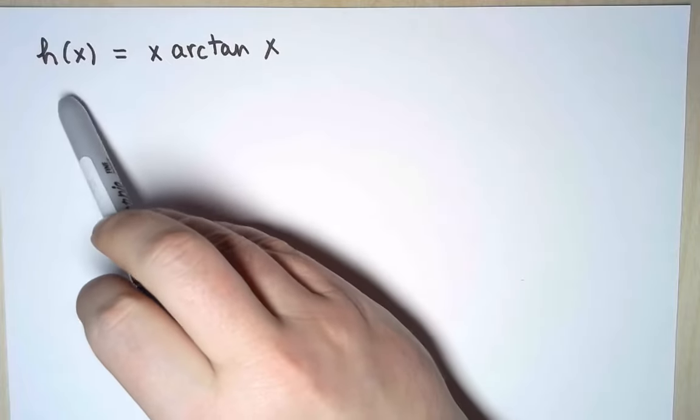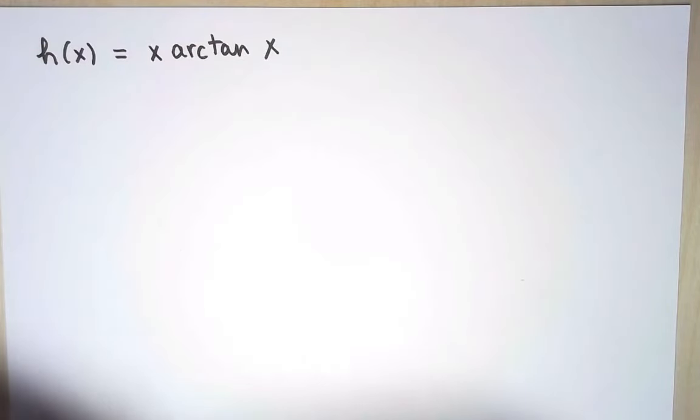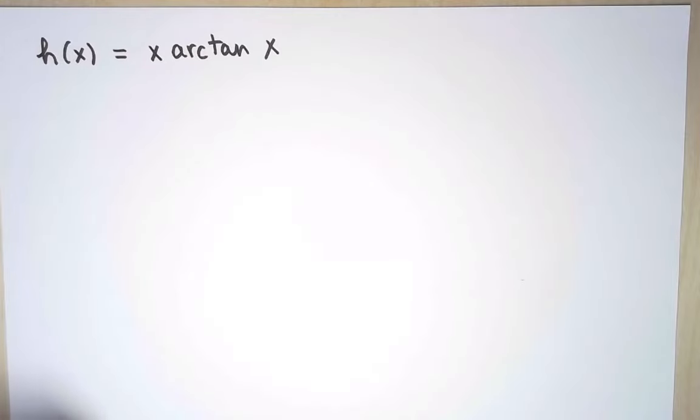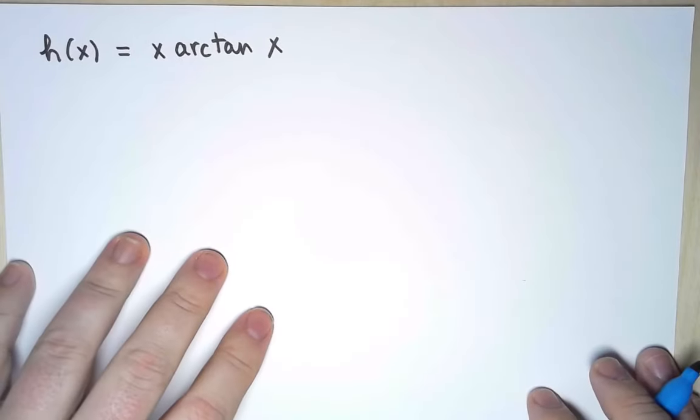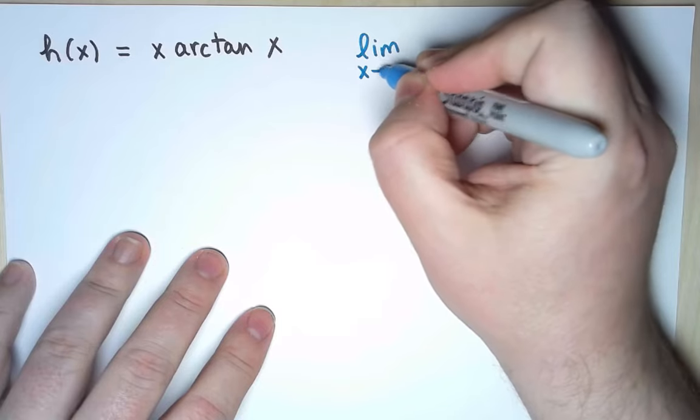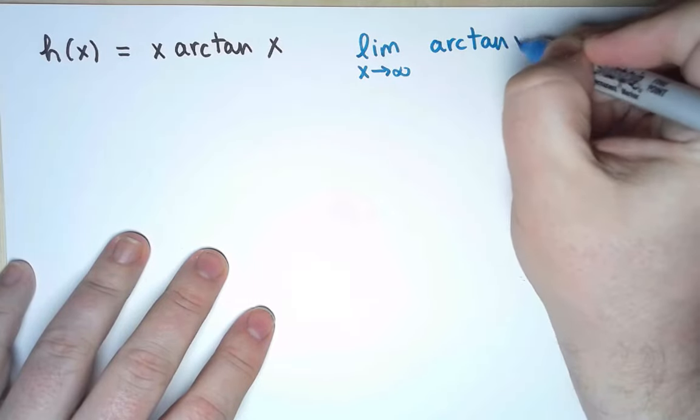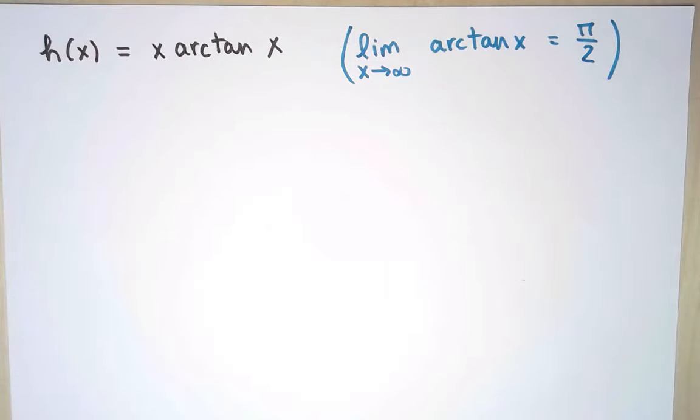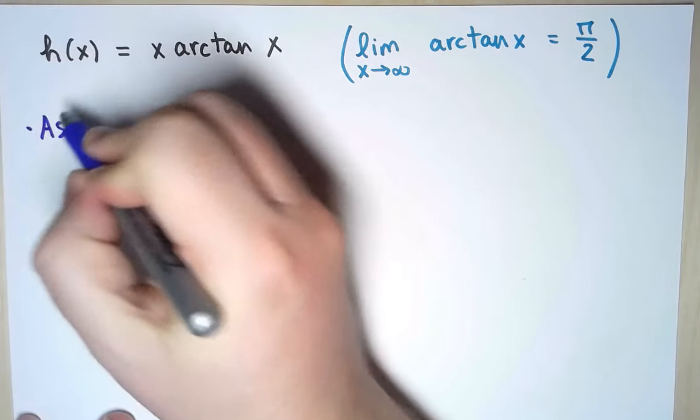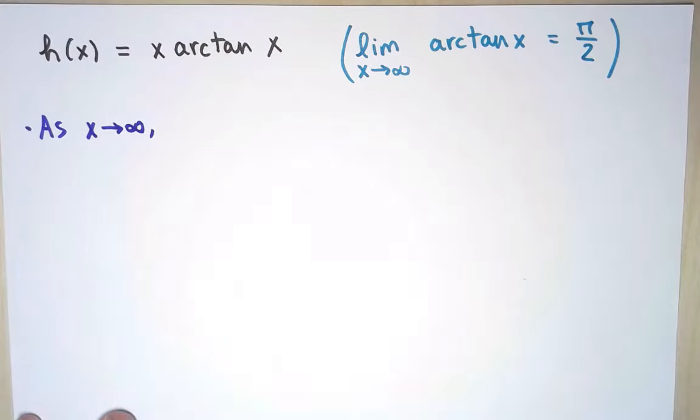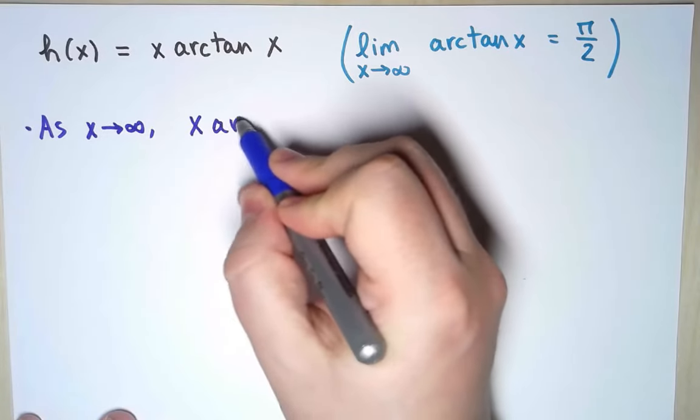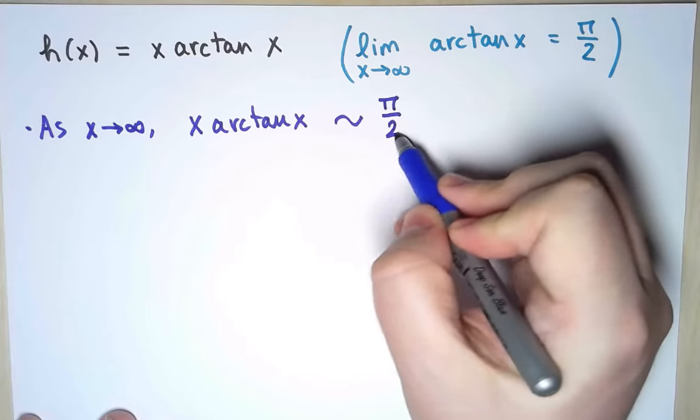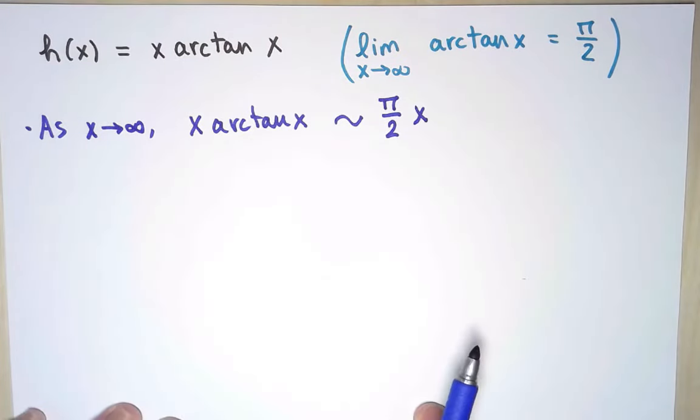I want to study the behavior of this function as x approaches infinity. The unusual part is arctan. I know what to do with x. But I remember that arctan by itself does have a horizontal asymptote. I know the limit as x goes to infinity of arctan of x is π over 2. So this suggests that as x is going towards infinity, my function perhaps behaves like π over 2 times x.